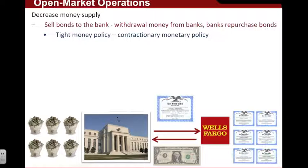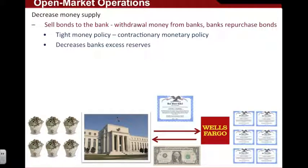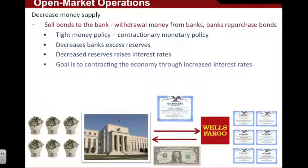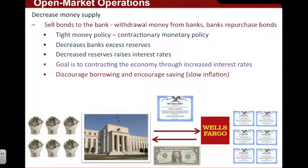This contractionary monetary policy is also known as tight money policy. Whereas expansionary monetary policy was designed to help the economy grow, contractionary monetary policy is designed to help the economy slow — for example, if there was too much inflation in the market. When the Federal Reserve wants to slow the economy, they decrease excess reserves in the banking system. Decreased reserves cause interest rates to increase. Higher interest rates deter borrowing and encourage saving, which slows the economy and thus slows inflation — at least causing disinflation.